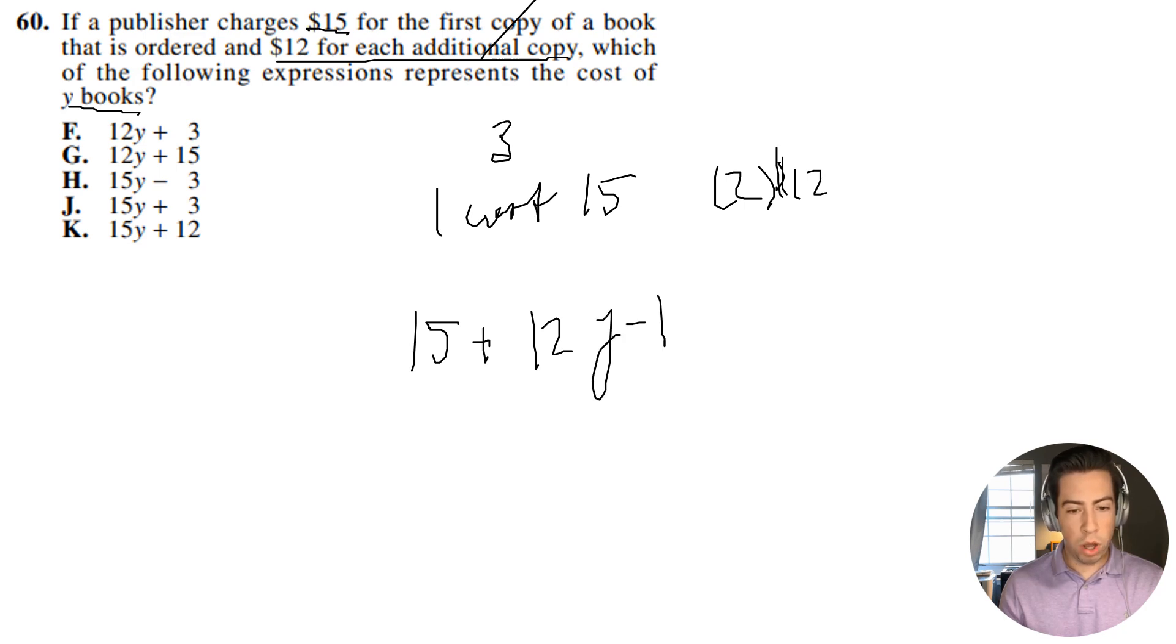Because this one right here is already included in the $15 right here. So it's actually going to be 15 plus 12y minus 12 and we're going to end up with 12y plus 3.